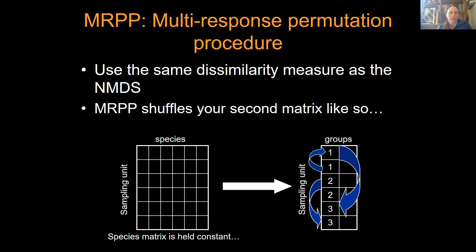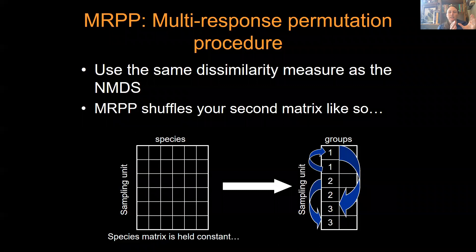Okay, so the first one is a multi-response permutation procedure. It uses the same dissimilarity measure as your NMDS. What it does is basically take your species matrix and hold it steady, then take your group matrix from your environmental matrix and shuffle the group membership around, just like the resampling t-test we talked about in week three.